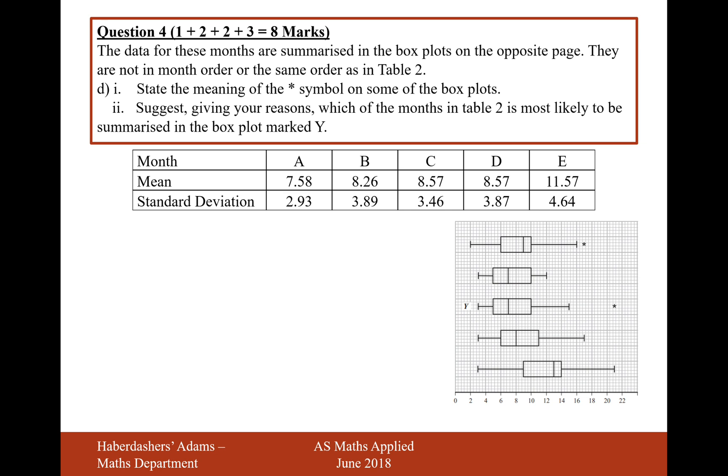Moving on to part D now. The data for these months are summarized in the box plots on the opposite page, or I've just put it down here. They are not in month order, or the same order as in table 2. Part D, part 1, states the meaning of the star symbol on some of these box plots. These are outliers.